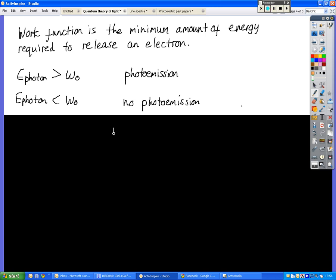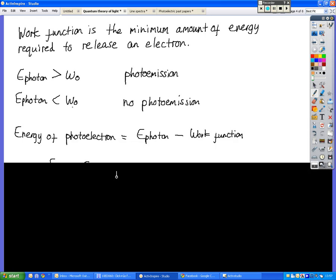So if the energy that your photon has, E equals HF, is greater than the work function, then you will get photoemission. You will get photoelectrons being spat out. If the energy of that photon, E equals HF, is less than the work function, the minimum amount of energy required to release an electron, then you will get no photoemission.